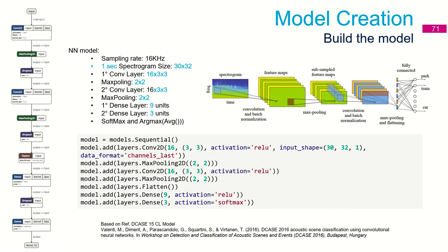Now we have pre-processed the data and prepared the development and evaluation datasets. It's time for the core activity: building the neural network model. Because we are recognizing pictures, we will use the well-known convolutional neural network structure for picture recognition. You can see the big advantage of the Keras library — we need only one line to define each layer. The first line defines the model type: sequential, meaning we define layer by layer.